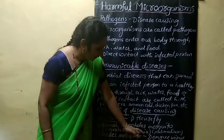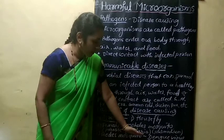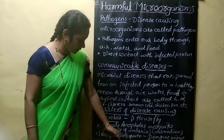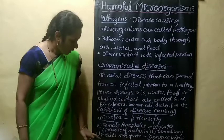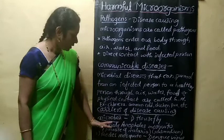Another carrier is the Aedes mosquito, which carries dengue virus. Dengue virus is transmitted with the help of the Aedes mosquito. So the common carriers of disease-causing microbes are the housefly, female Anopheles mosquito, and Aedes mosquito.